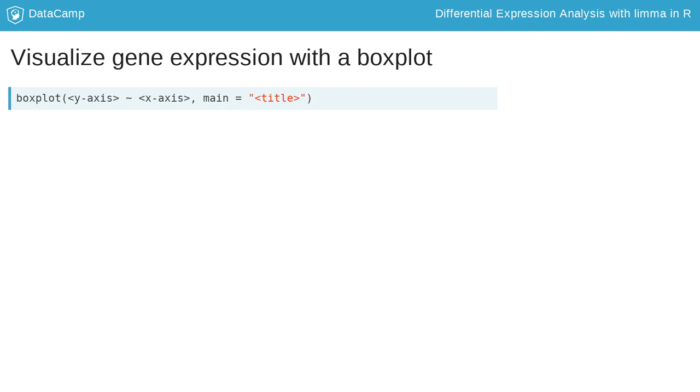To create boxplots of a single gene, you insert the gene expression to the left of the tilde, the phenotype variable to the right, and use the feature data to label the title of the plot.